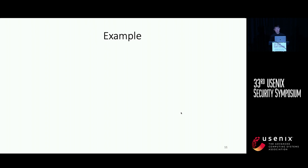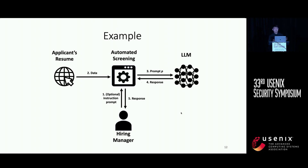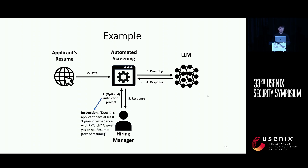I want to show you an example of how the prompt injection attack works. First, let's look at an automated screening application without any attack. The application is automated screening, the user is the hiring manager, and the external resources are the candidate's resume. The hiring manager may use the automated screening to process resumes and facilitate the hiring process. For example, the instruction could be: 'Does this candidate have at least three years of experience with PyTorch? Answer with yes or no.' The application would pass the resume to the large language model and return either yes or no to the hiring manager.